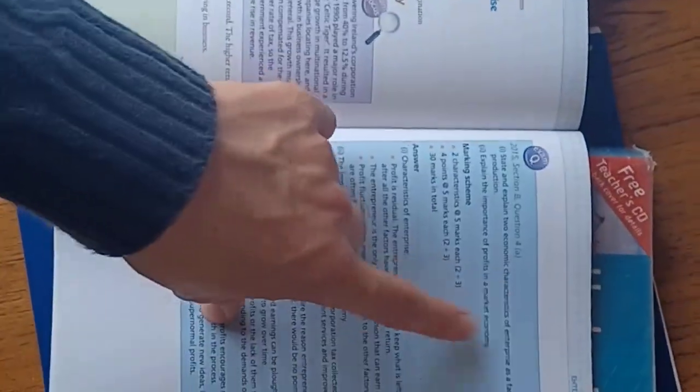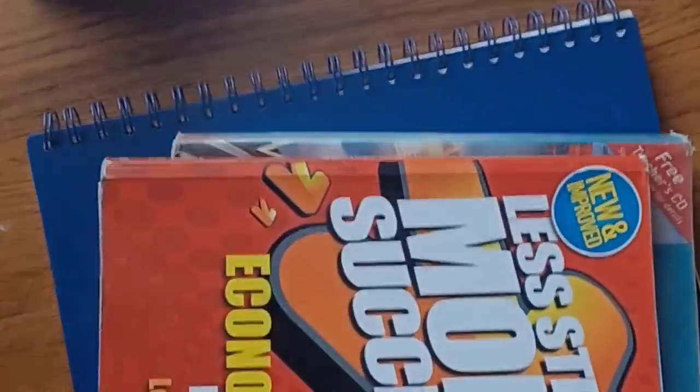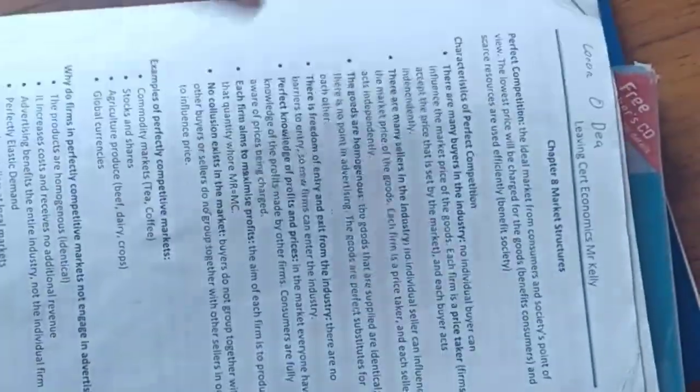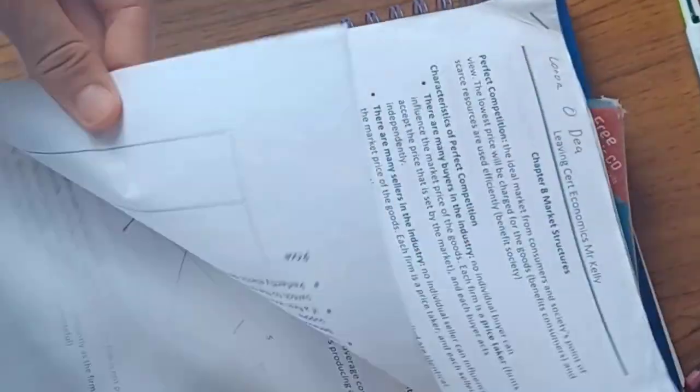Unfortunately, the notes I do have are from these old books that are for the old course, but they still more or less retain the same amount of information. They just have chapters that we don't do. For example, the history of economics and stuff like that. I also have somehow managed to retain a few of the sheets my teacher gave me. These are very good notes. Unfortunately, over the past two years, I didn't keep on to all of them.